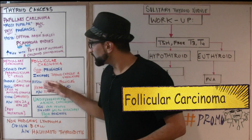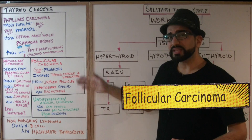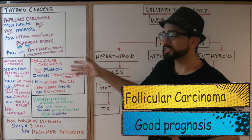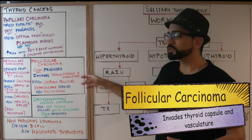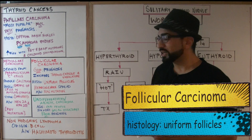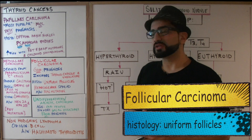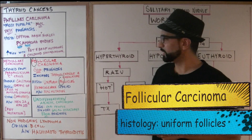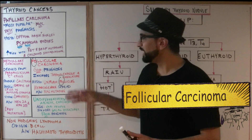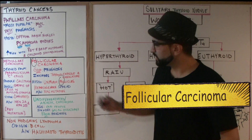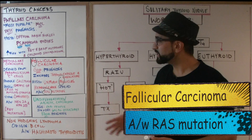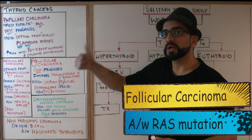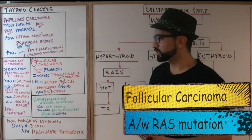The next cancer is follicular carcinoma. This one also has good prognosis — not as great as papillary carcinoma, but still better than the rest. It invades the thyroid capsule and the vasculature. On histology, you'll see uniform follicles — think of the F in follicles and the F in follicular carcinoma. It has hematogenous spread and is associated with a RAS mutation, whereas papillary carcinoma is associated with RET and BRAF mutations.